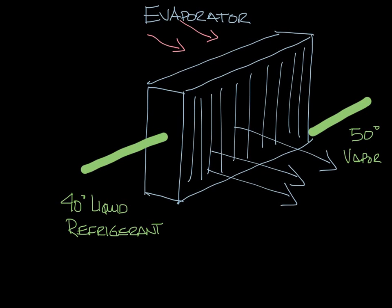So let's move this over to the side and draw the next component. When the refrigerant vapor leaves the evaporator, it goes to the compressor. The compressor compresses the refrigerant vapor. This raises the pressure and temperature of the refrigerant vapor. So this is our compressor.